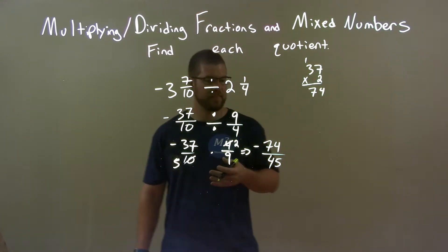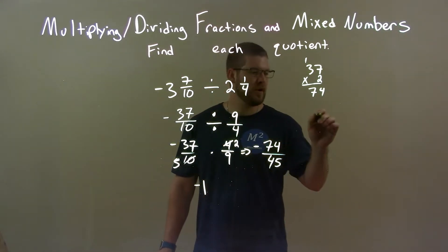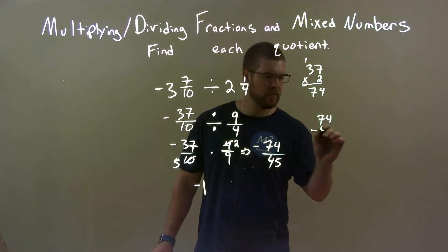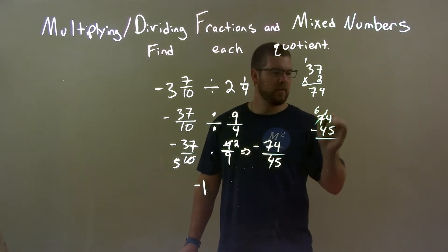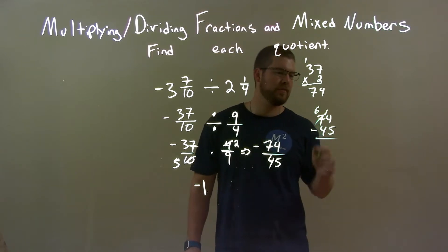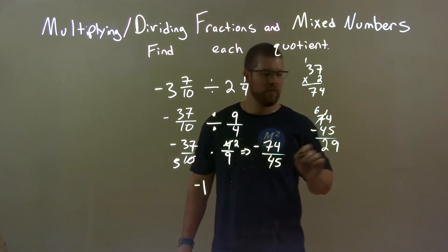We have our answer improper. Let's write it as a proper. Well, 45 only goes into 74 one time. So we have one time here. It's going to be negative. But I want to see what's left over. 74 minus 45. Subtract the 2. 6 carry the 1, because we're going to do 4 minus 5.